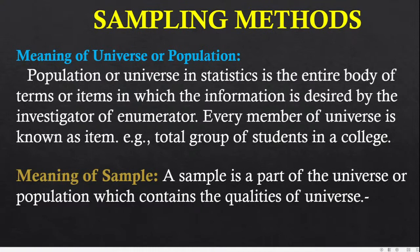Technique of data collection: by two ways we can collect information — by census method and otherwise sampling method. Census method is otherwise known as complete enumeration method. Under this method each and every unit of the universe is selected for data collection, and none is avoided.